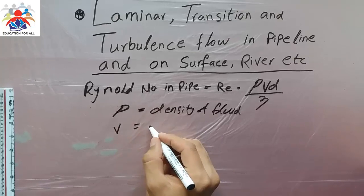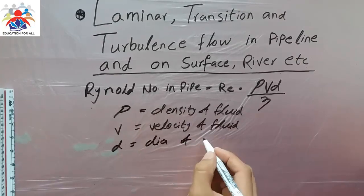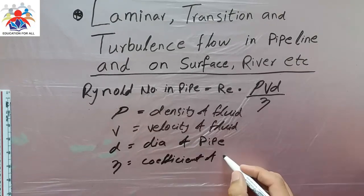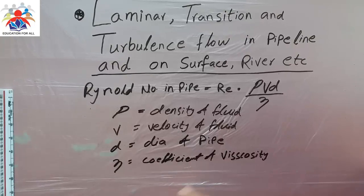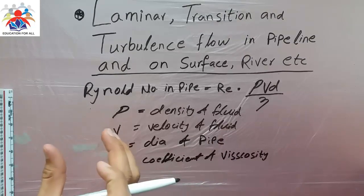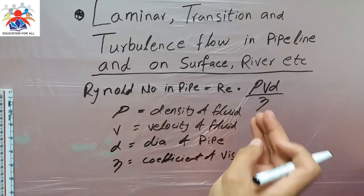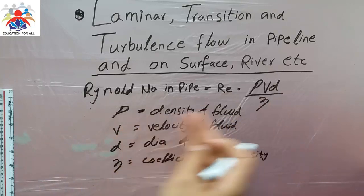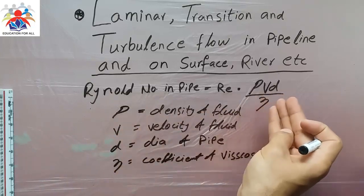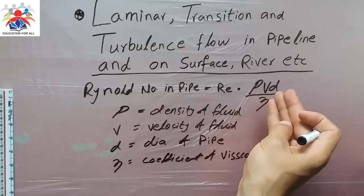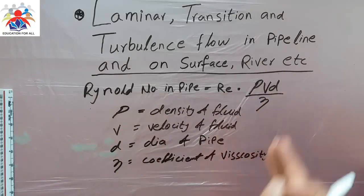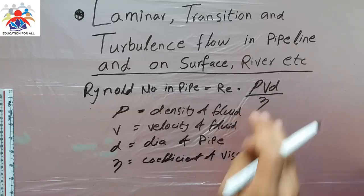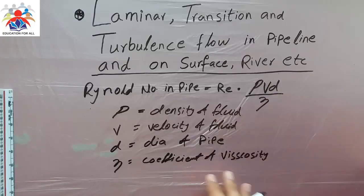So in this formula, rho is the density of the fluid, V is the velocity of the fluid, dia is the diameter of the pipe, and the denominator is the coefficient of viscosity. So the Reynolds number in a pipeline equals density multiplied by velocity multiplied by diameter, divided by the coefficient of viscosity.